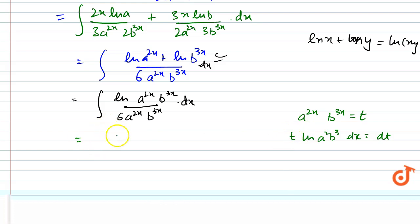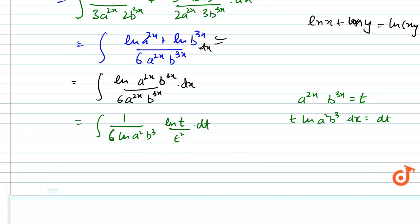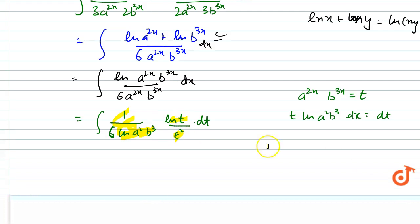After substitution, we have 1/6 times the integral of log(a²·b³) times log(t) divided by t², dt. We can see this is a constant, and we have two terms: log(t) and 1/t², so we will use the ILATE rule here.